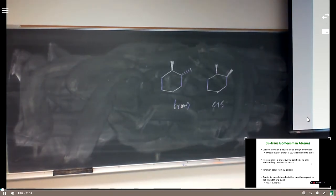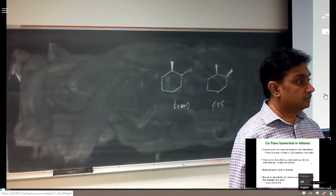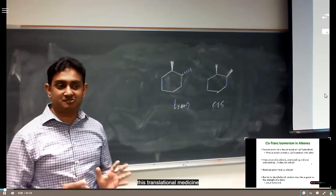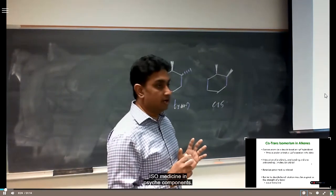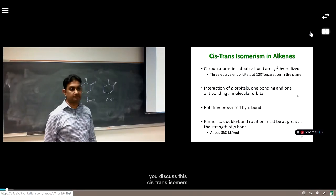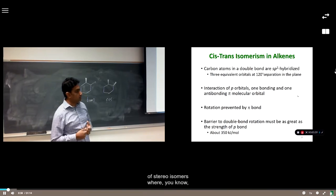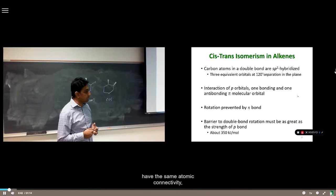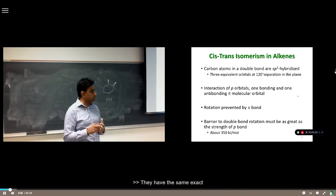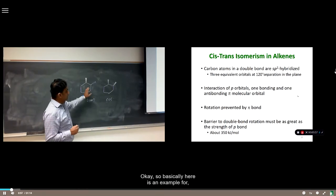Today we are going to start with cis-trans isomerism for alkenes. We already talked about cis-trans isomerism before — we saw it in cyclic compounds when we discussed cycloalkanes. Cis-trans isomerism is basically an area of stereoisomers where the two isomers have the same atomic connectivity but different arrangement of atoms in 3D space.